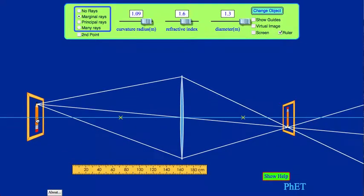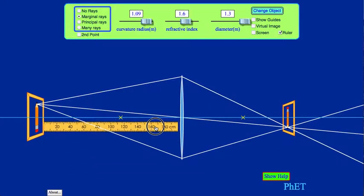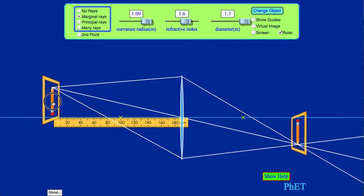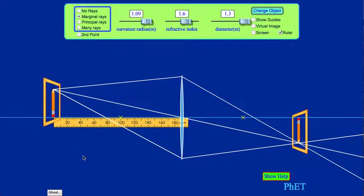I'm going to take my ruler and put it at 190. So there's 190 right there and then I'm going to move my object to this location. What I notice is that when I put my object here my image is formed on the other side of the lens.